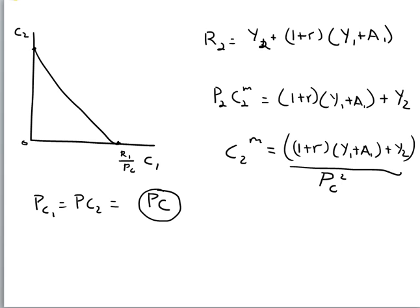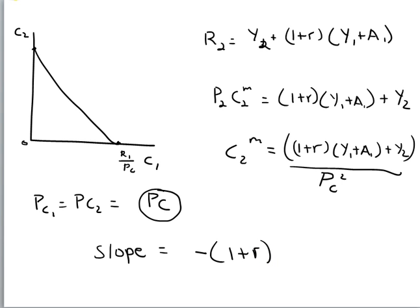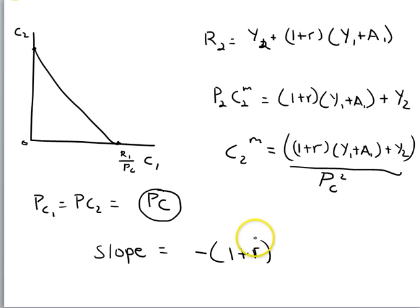We'll deal with inflation and deflation later. For now, let's say the price of consumption is constant through time. Solving rise over run — where rise is R2/PC and run is R1/PC — the slope of the intertemporal budget line equals negative (1 + R). You can work through the math using those variables and you will derive slope equals negative (1 + R), which means in real-world terms, the price of consumption through time, when prices are constant, involves the interest rate — the price of borrowing or saving through time.